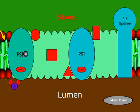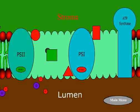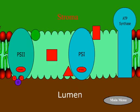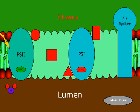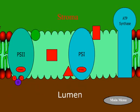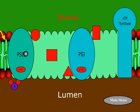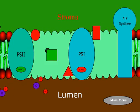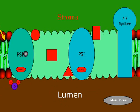Here you see light from the light harvesting chlorophyll striking the P680 molecule of Photosystem II. P680 loses electrons and becomes oxidized. It captures new electrons, or becomes reduced, by splitting water, which produces hydrogen plus ions and oxygen.